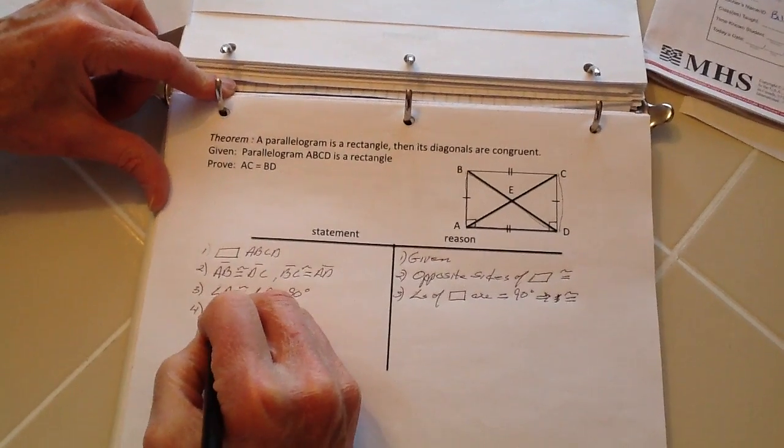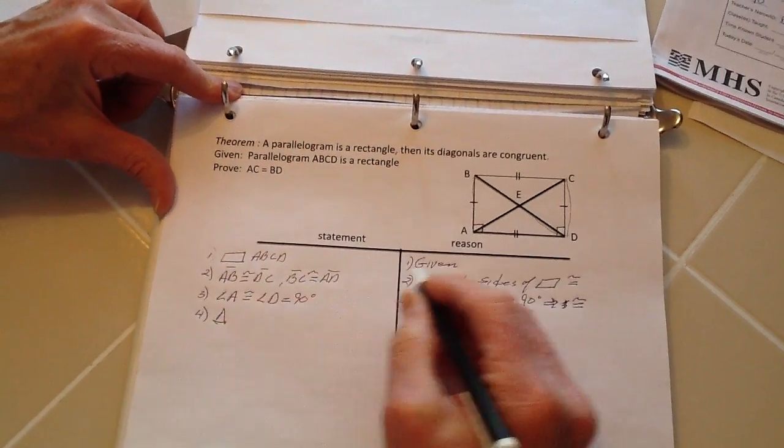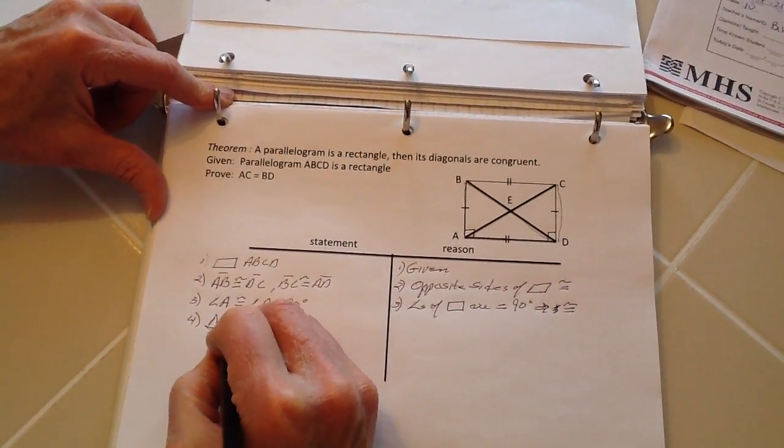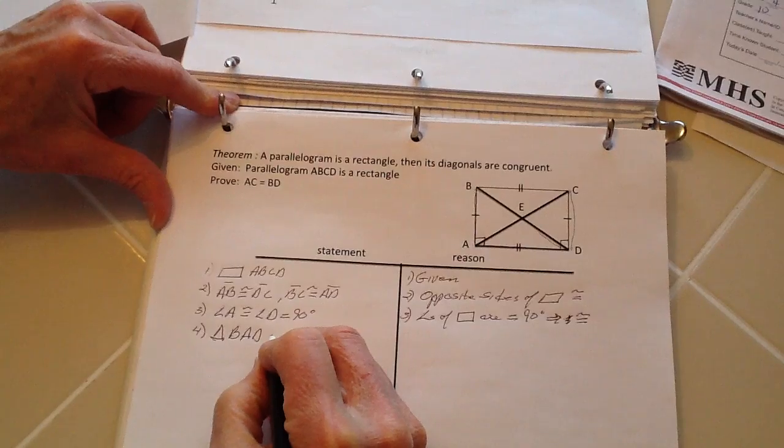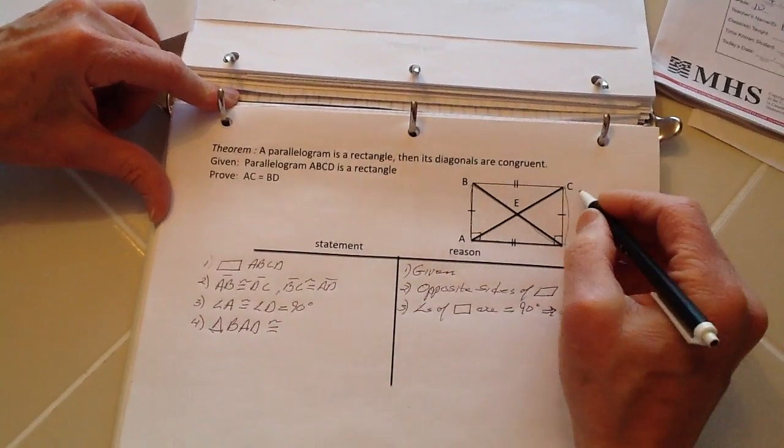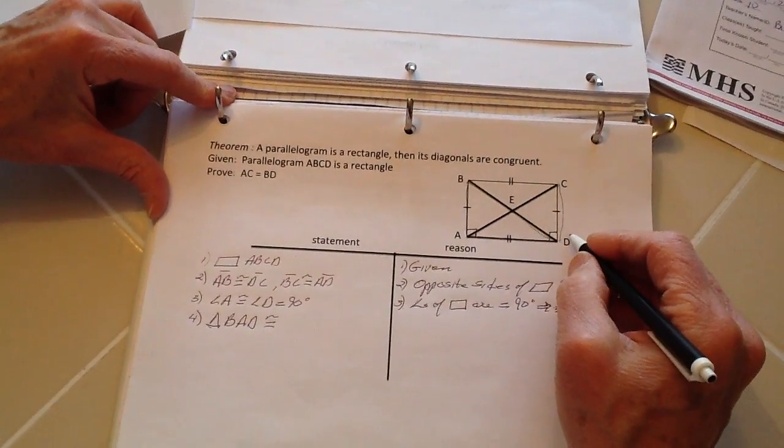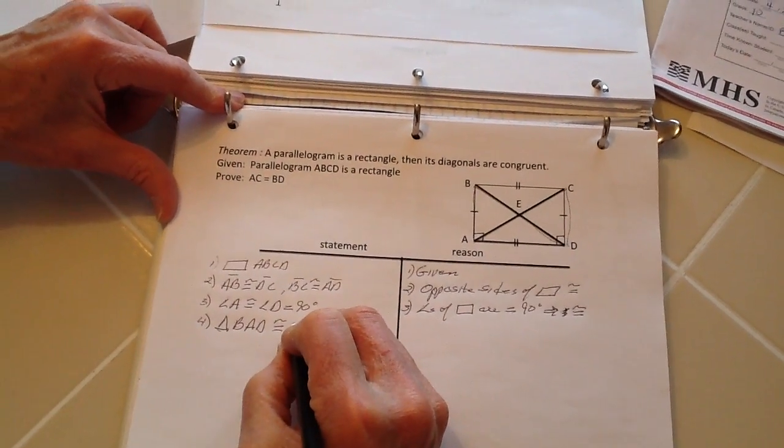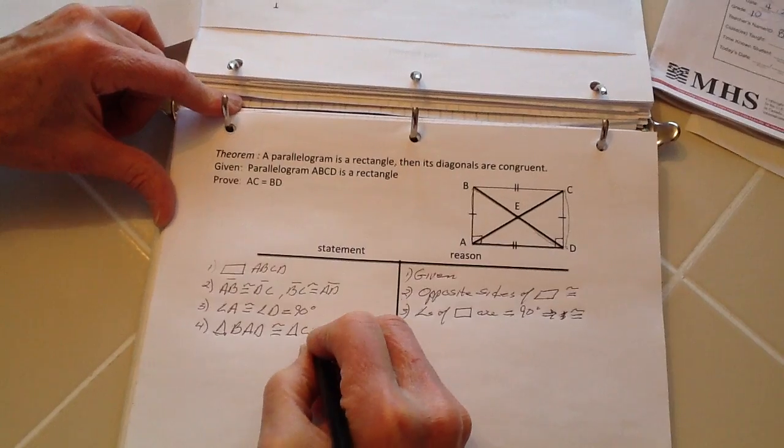So we put down here for step number four: triangle BAD is congruent to triangle CDA.